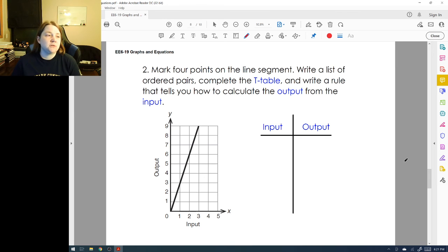So now what they want us to do is they want us to mark 4 points on this line segment. Well, I can see 0, 0 on there. That would be 1. I can also see 1, 3. So I'm going to go ahead and put 1, 3. I can see 2, 6. And I can see 3, 9.